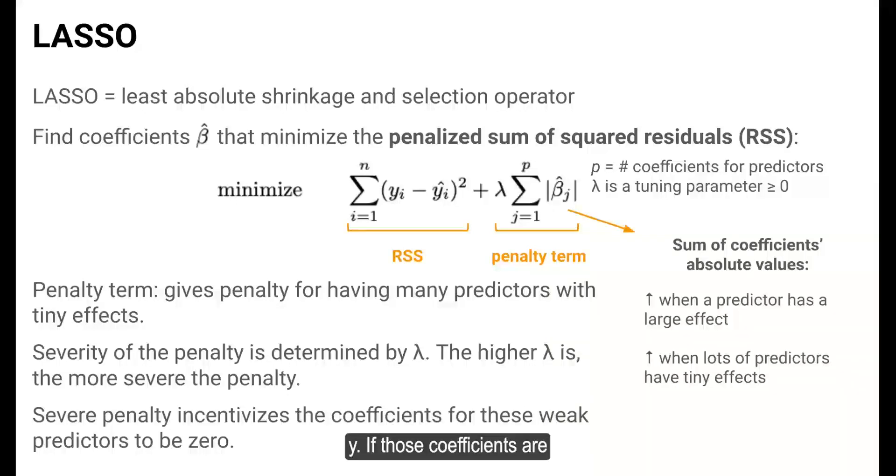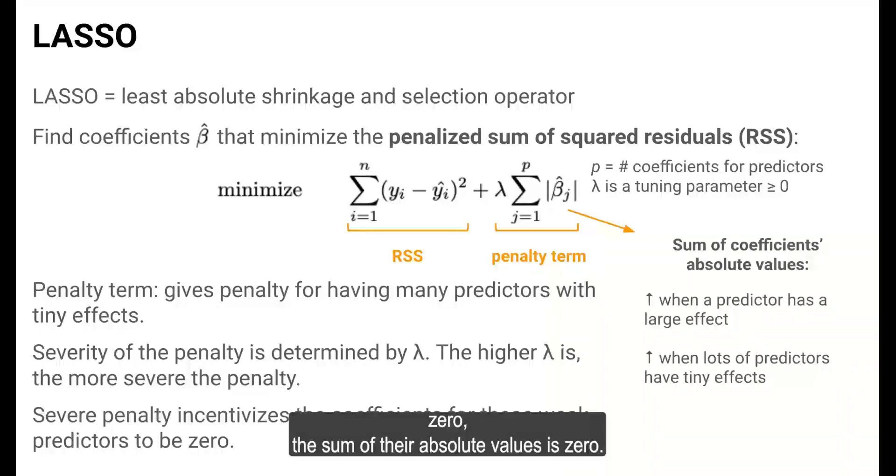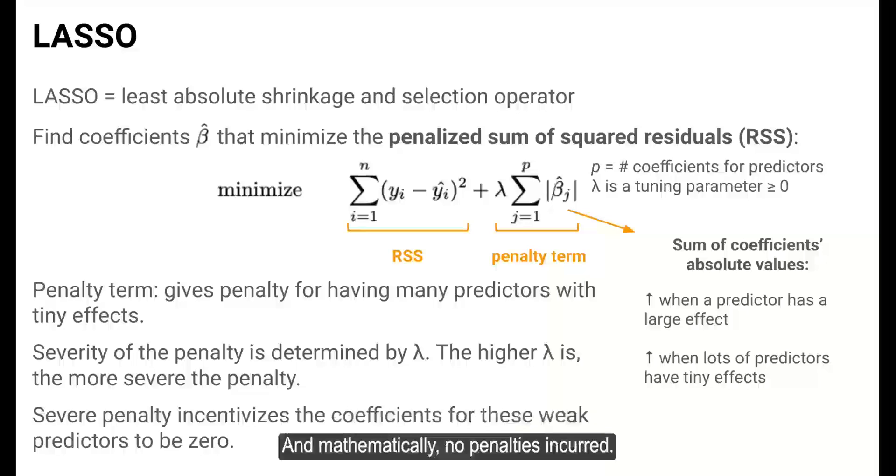Why? If those coefficients are zero, the sum of their absolute values is zero, and mathematically, no penalty is incurred.